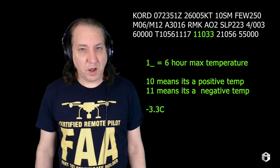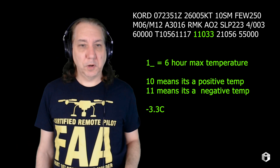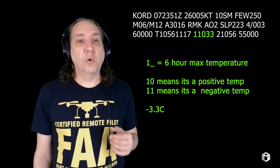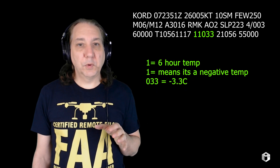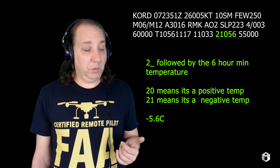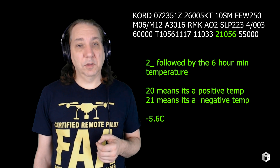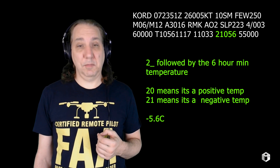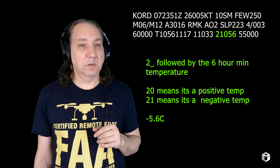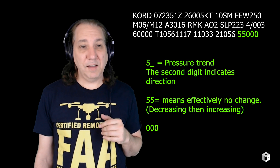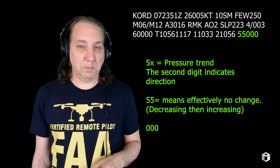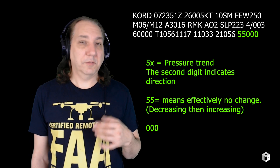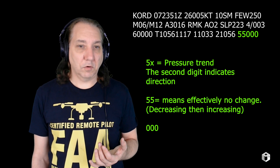Just work through it. 11033 — this is a six-hour maximum temperature: negative 3.3 degrees centigrade. 21056 — this is a six-hour minimum temperature: negative 5.6 degrees centigrade. 55000 is the pressure trend — look at the chart, that'll help explain some of it. Some of it you just have to work through yourself and then you'll start understanding it.